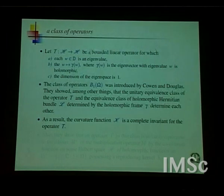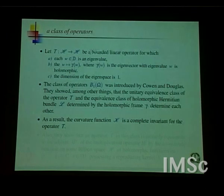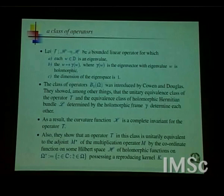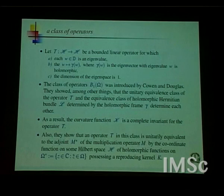They also provided a model for all such operators T. Without emphasizing it earlier, I assumed the Hilbert space is a Hilbert space of holomorphic functions — that is not really an extra assumption, because all such operators T can be modeled as adjoints of multiplication operators on a Hilbert space of holomorphic functions on the domain Ω with a reproducing kernel. In fact, that reproducing kernel is what defines the holomorphic section.